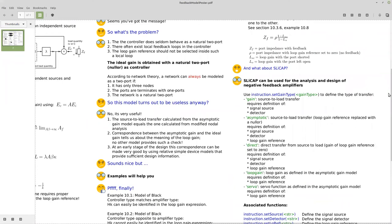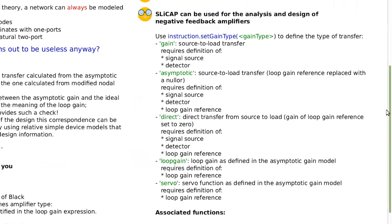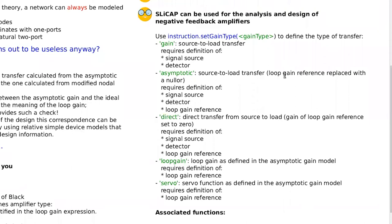Let's go to SLiCAP. There is a thing called gain type in SLiCAP. We have already used gain type VI for noise analysis and gain for finding a transfer from source to load. SLiCAP supports the asymptotic gain model, so gain type can be: gain, asymptotic, direct, loop gain, or servo. The gain is the source-to-load transfer calculated from modified nodal analysis. The asymptotic gain is calculated when the reference variable is replaced with a nullor — meaning the gain of the reference variable becomes infinite.